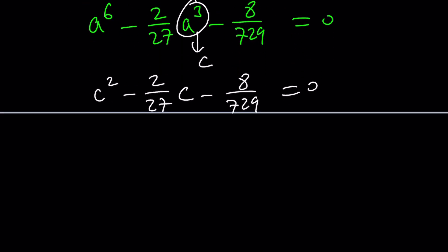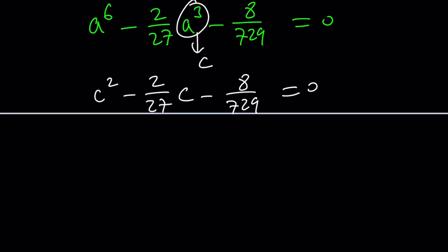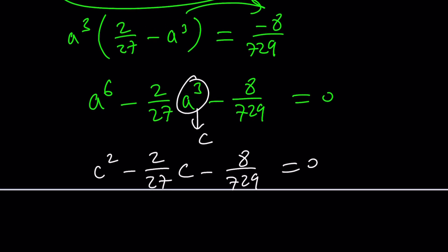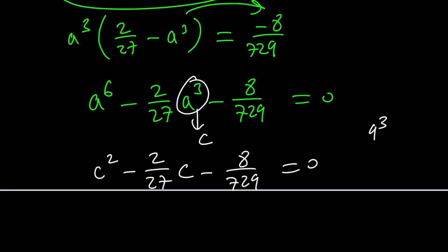If you want, you can go ahead and multiply everything by 729. By the way, 729 is 27 squared, which is 9 to the third power — there's a good reason for that, because of 3 squared and 3 cubed. So multiplying everything by 729, we get 729c squared minus some terms, with cross-cancellation happening.